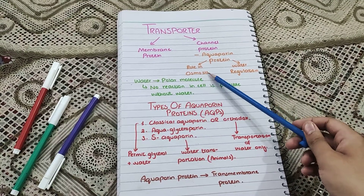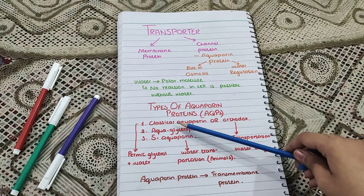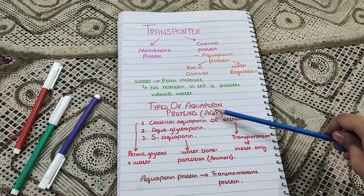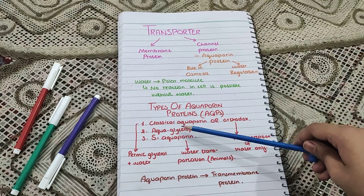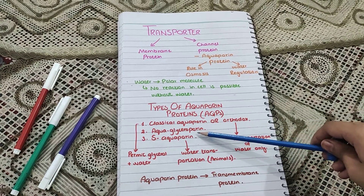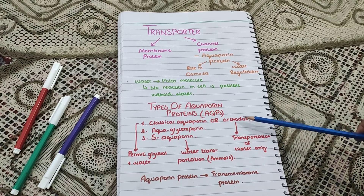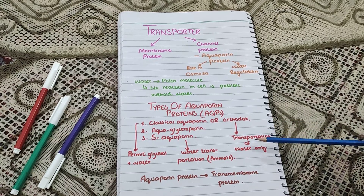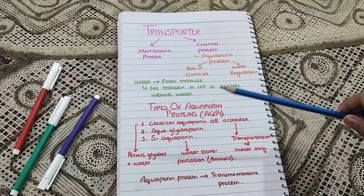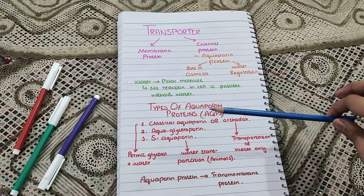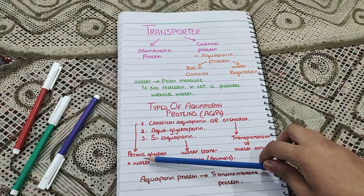Water is super necessary for cell functions. There are three main types of aquaporin proteins. The first one is the classical aquaporin, or orthodox aquaporin, which has a high-level role in the transportation of just water — it transports water and nothing else. The second one is the aquaglyceroporin.